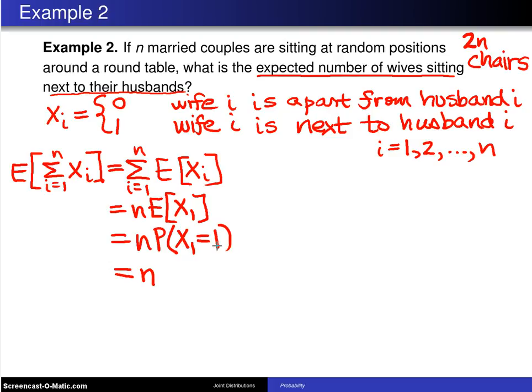So now the problem can be worked by determining the probability that one couple is sitting next to one another. We could put the wife in a chair or the husband in the chair. Let's just put the husband in one of these 2n chairs. Well, if that is the case, then the wife has 2n minus 1 chairs to choose from.